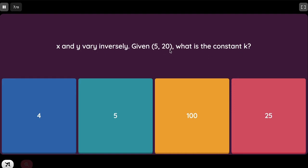x is going to be 5, y is going to be 20. We will multiply 5 and 20 to get k. Our answer is going to be 100.